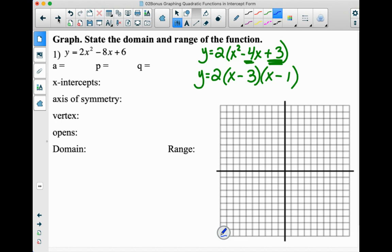So a is 2. P in the formula, because here is the formula, it's a parentheses x minus p parentheses x minus q. Sorry, I jammed it in there with that green stuff. So p is going to be 3.